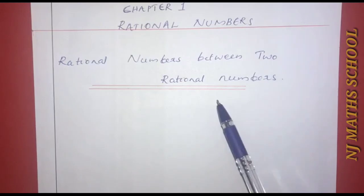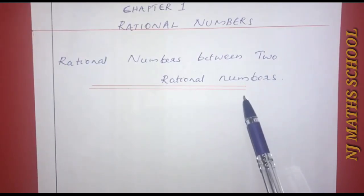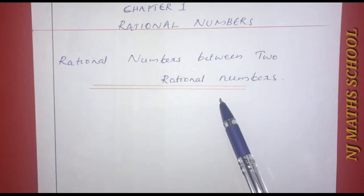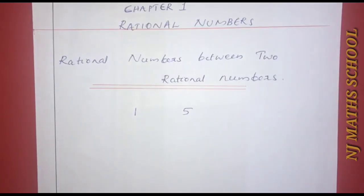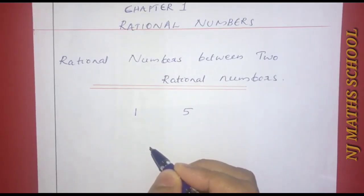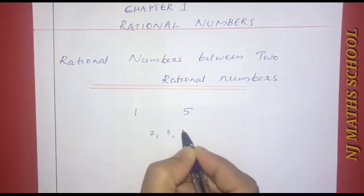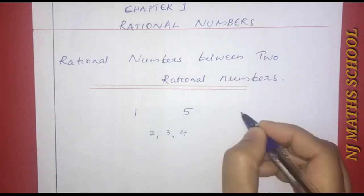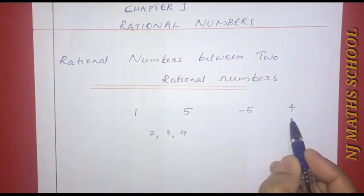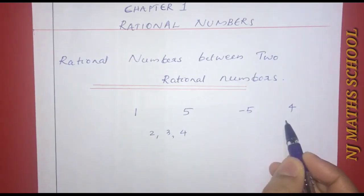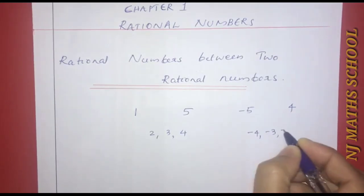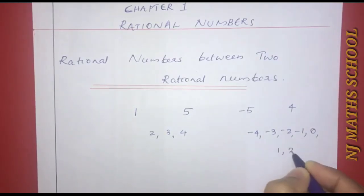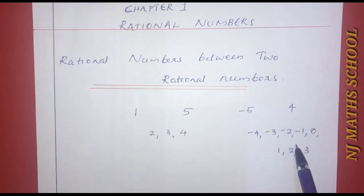Chapter 1: Rational Numbers. The last section is Rational Numbers Between Two Rational Numbers. We have marked rational numbers on the number line. We look at natural numbers 1 and 5, integers 2, 3, and 4. We also look at negative integers: negative 5 and 4, negative 4, negative 3, negative 2, negative 1, 0, 1, 2, and 3. These are two numbers, like negative 5 and 4.